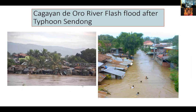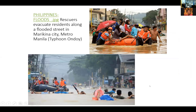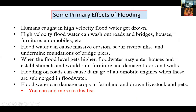Primary effects of flooding: humans can get caught in high-velocity flood water; high-velocity flood water can wash out roads, bridges, houses, furniture, and automobiles; flood water can cause massive erosion, scar river banks, and undermine bridge pier foundations; when flood level rises, water enters houses and establishments ruining furniture and damaging floors and walls; flooding on roads can damage automobile engines when submerged; and flood water can damage crops and drown livestock and pets.